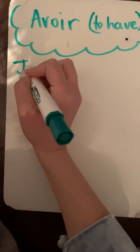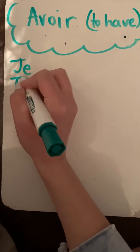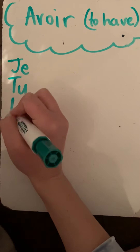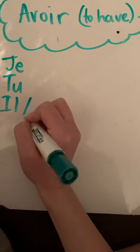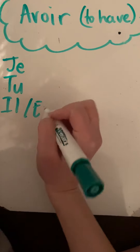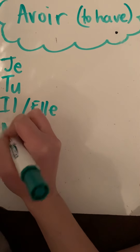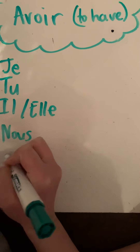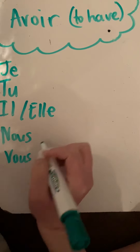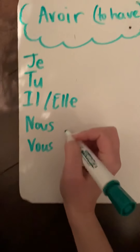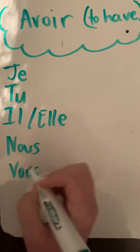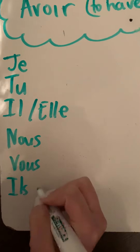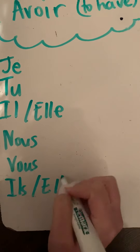So the pronouns are: je, which means I; tu; il or elle — they're always conjugated the same; nous; vous; and the last one is ils or elles.